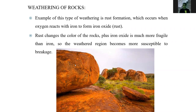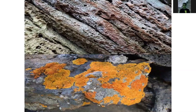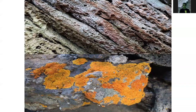An example of chemical weathering is rust formation — when oxygen reacts with iron to form iron oxide or rust. Rust changes the colors of the rocks, and iron oxide is much more fragile than iron, so the weathered region becomes more susceptible to breakage. These color changes in rocks are primarily due to the chemical reaction of water or ice on the rock surface.